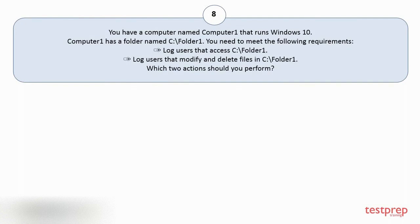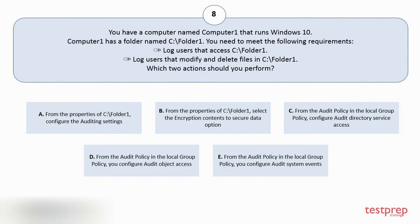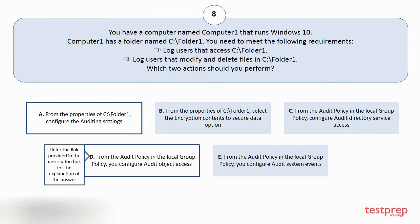Question number eight. You have a computer named Computer1 that runs Windows 10. Computer1 has a folder. You need to meet the following requirements: 1. Log users that access the folder. 2. Log users that modify and delete files in the folder. Which two actions should you perform? Options: A. From the properties of the folder, configure the auditing settings. B. From the properties of the folder, select the encryption contents to secure data option. C. From the audit policy in the local group policy, configure audit directory service access. D. From the audit policy in the local group policy, configure audit object access. E. From the audit policy in the local group policy, configure audit system events. The correct answers are option A and D.